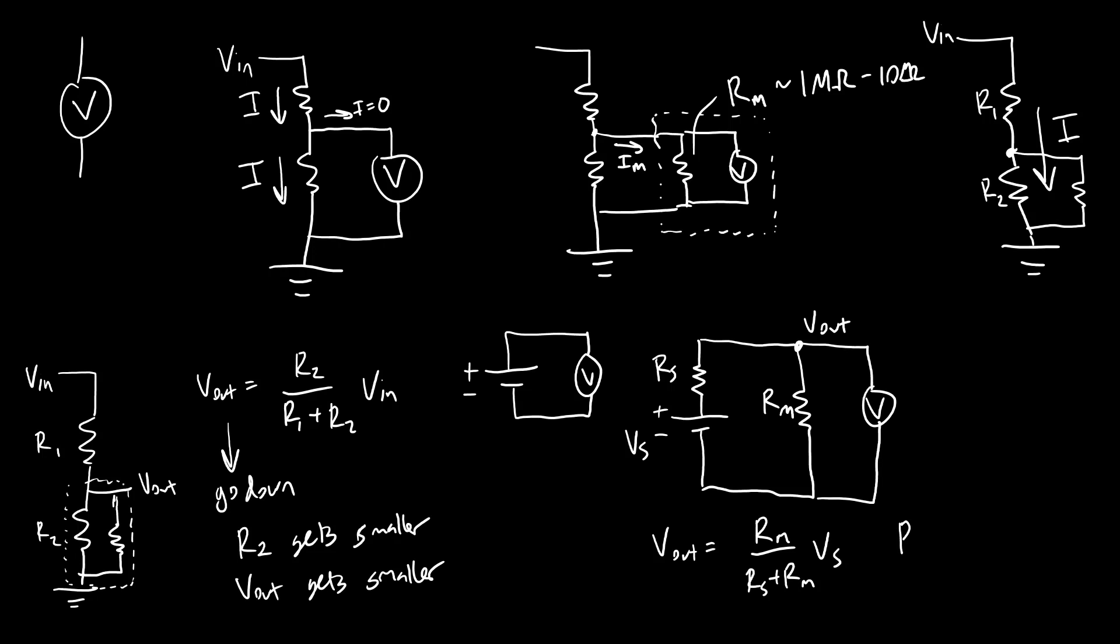So as long as RM is much greater than the source resistance, which should be the case, so the measurement resistance of the multimeter is in the megaohms range, and the source resistance of something like a battery is typically less than an ohm. So in that case, VS is going to get very, very close to Vout because this fraction approaches one.